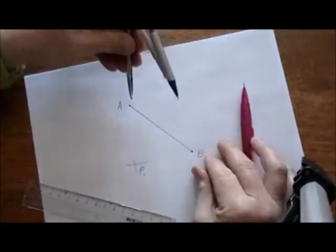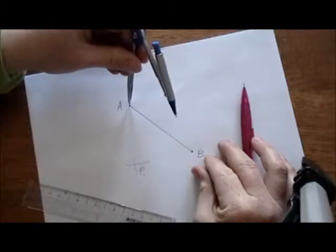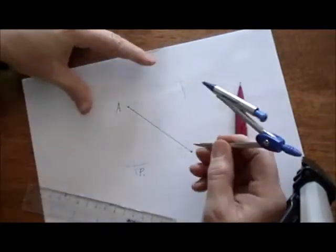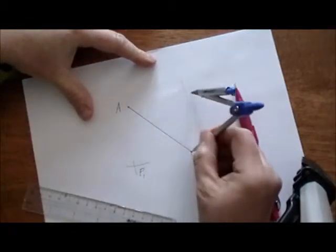Let's do the same thing now on the other side of the line. We'll center at point A, scribe an arc, and center at point B, and scribe an arc.